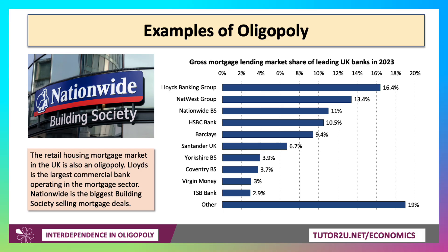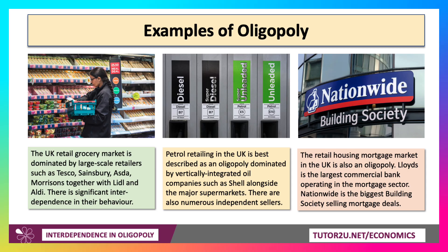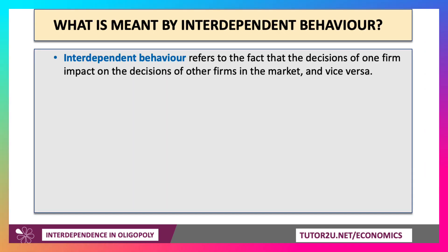Those are good examples of oligopoly, and one of the key features of the industry is interdependent behaviour. Interdependent behaviour refers to the fact that the decisions of one firm inevitably impact on the choices and the decisions of other firms in the market, and vice versa.